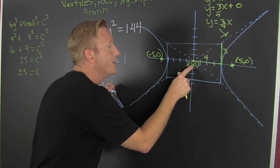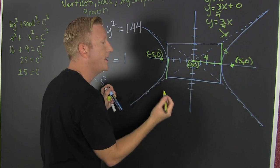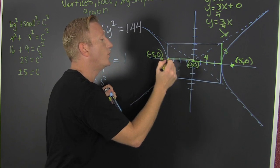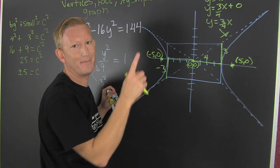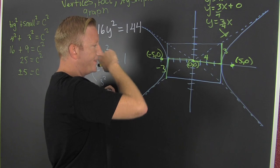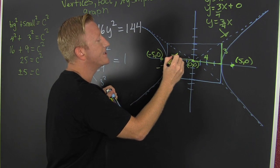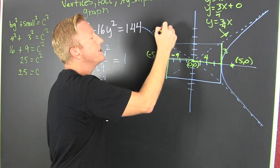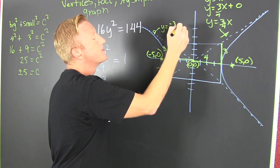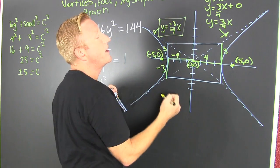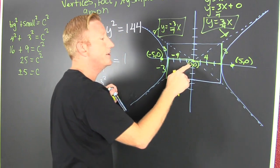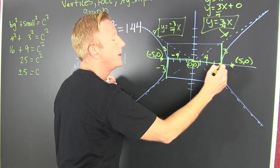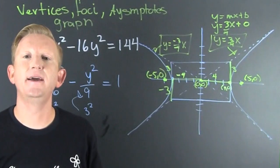Now let's find the equation of the other asymptote. This one goes minus 4 in x and rises 3 units, so that's a slope of negative 3 over 4. So that asymptote is y equals negative 3 over 4 x. So we've found our asymptotes, center, and foci. Our vertices lie at (4, 0) and (minus 4, 0). And that's just about all I had to say about this example.